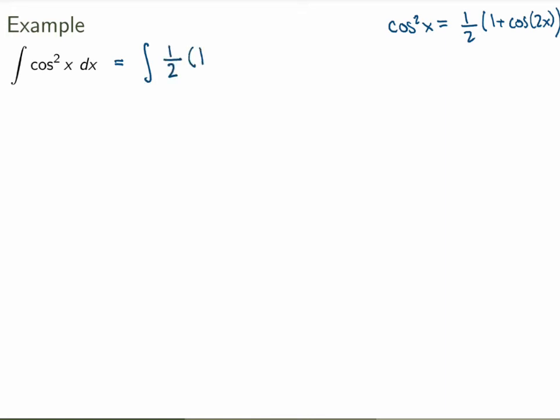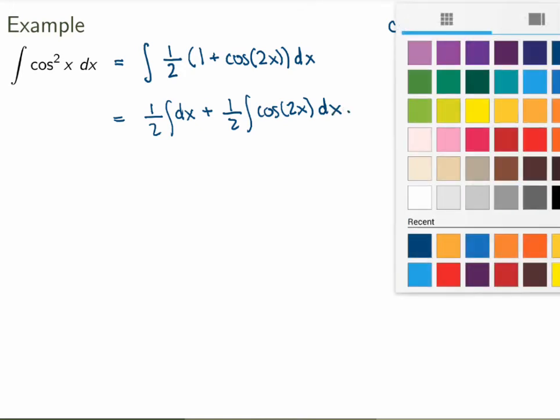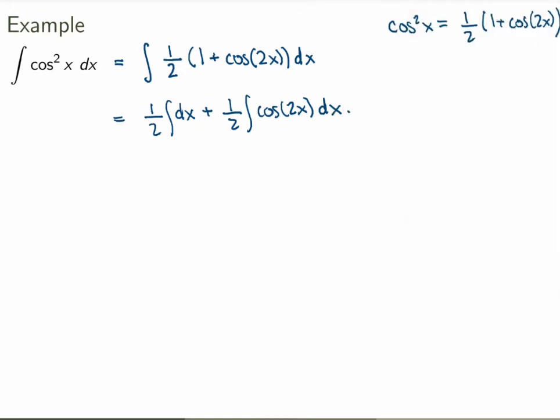So if I just use this, I'll get that I have to evaluate the integral 1/2 times (1 + cos(2x))dx, which I can split into two integrals, first 1/2 dx plus 1/2 of integral of cos(2x)dx. Now that's great! First integral I can do directly, the second one I just do a simple substitution, u = 2x, du = 2dx.